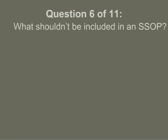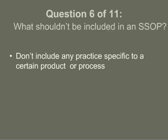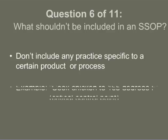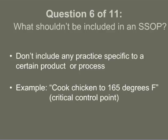Technically, any practice that is specific to a certain product or process shouldn't be included in SSOPs, but is more appropriate to a HACCP plan. For example, stating that you will cook chicken to 165 degrees or more, or if you're making summer sausage and the smoking and cooking process needs to go to 155 degrees — those are really critical control points specific to that process, and they don't fall under the concept of SSOPs.